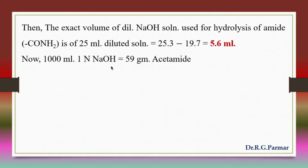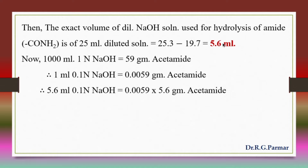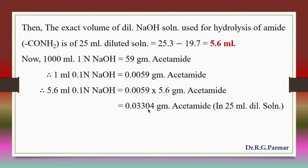Now, 1000 ml of 1 normal NaOH is equivalent to 59 g of acetamide (CH3-CO-NH2, molecular weight = 59). So if 1 ml of 0.1 normal NaOH is used, then 0.0059 g of acetamide is present. Here, 5.6 ml of 0.1 normal NaOH was used in hydrolysis, so acetamide = 0.0059 × 5.6 = 0.03304 g of acetamide in 25 ml dilute solution.